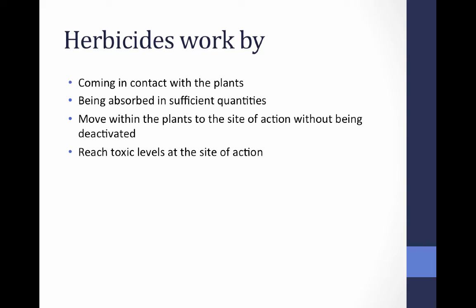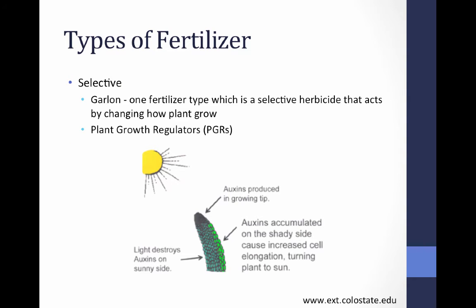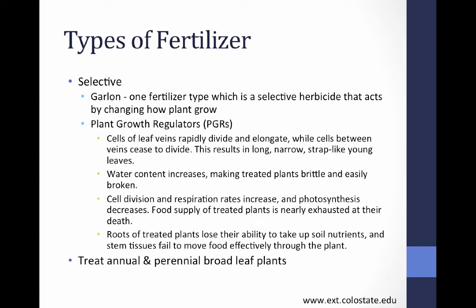One type of herbicide can be either selective or non-selective. Garlon is one example of a selective herbicide that acts by changing how plants grow, including plant growth regulators. The slide goes through how those plant growth regulators are changed — you can pause and read the details on how a selective herbicide works.